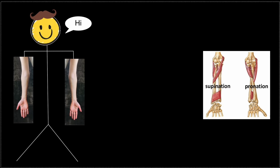If we want to understand what is lateral and what is medial for the hand and forearm, we need to know what is anatomical position. In this picture you can see my hands. The anatomical position is when the palm is facing forward. In this position, the two forearm bones — the ulna and radius — are parallel to each other, and that's why this is the correct anatomical position.